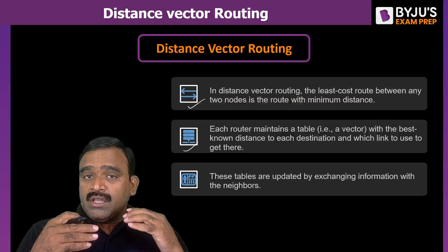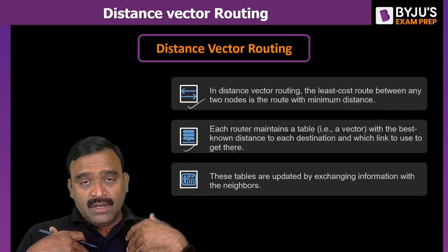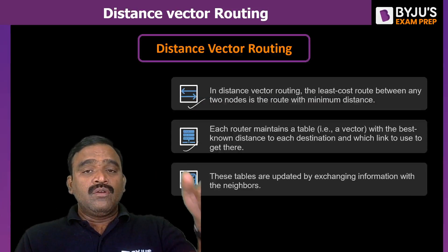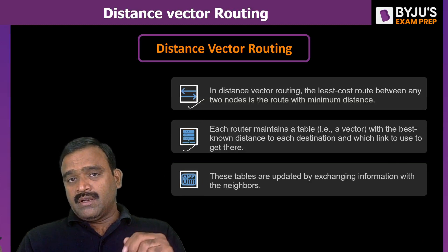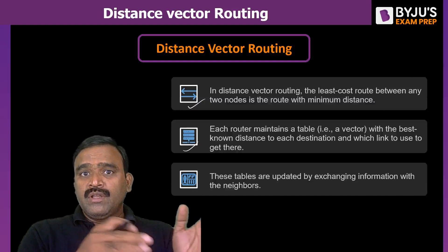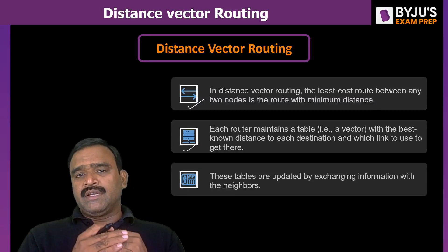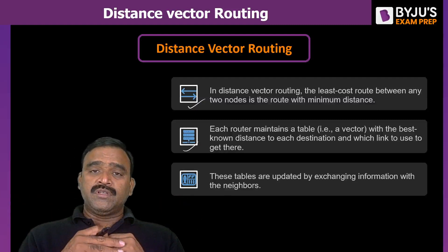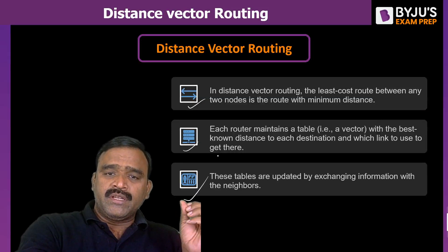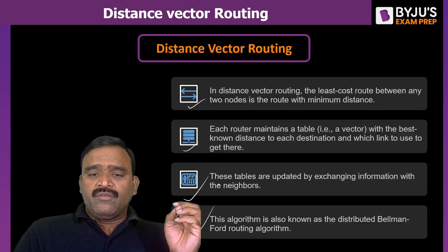In distance vector routing, if I wanted to go to a router which is not my neighbor, I look at how my neighbors are going. For example, my neighbors are A and B. If C is not my neighbor, I check how A will go to C and how B will go to C, then take the best path. For that we need to exchange information with neighbors. This algorithm is also known as the Bellman-Ford routing technique.